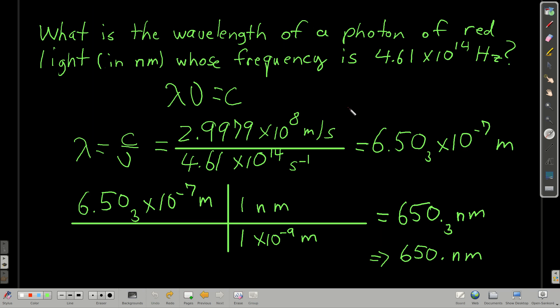All right, so let's do an example. It ends up that a unit of light, we'll see later that light can act as a particle, and those particles are called photons, a photon of red light. And we're going to find the wavelength of that light in nanometers, commonly used for visible light. And the frequency of that light is 4.61 times 10 to the 14th hertz, or inverse seconds. So what's the wavelength?